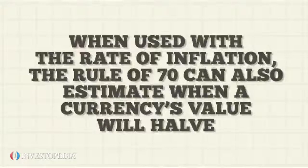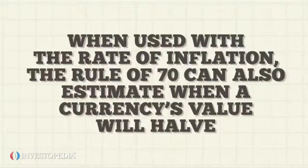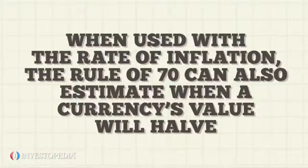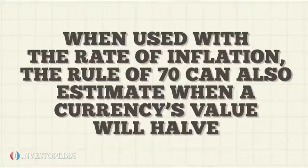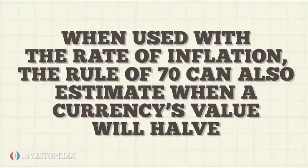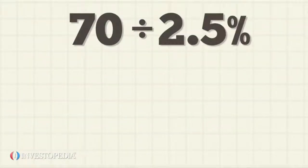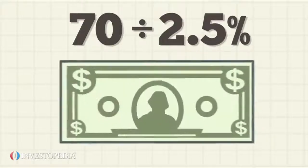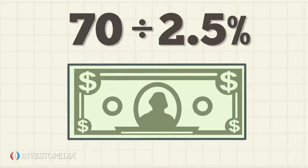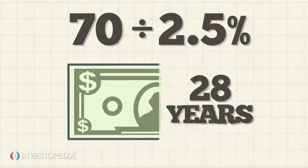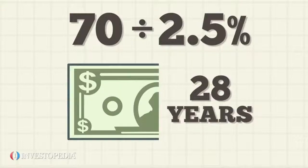When used with the rate of inflation, the rule of 70 can also estimate when a currency's value will halve. For instance, if the inflation rate is 2.5% in a particular country, then the standard monetary unit of that country will halve in purchasing power in approximately 28 years — 70 divided by 2.5.